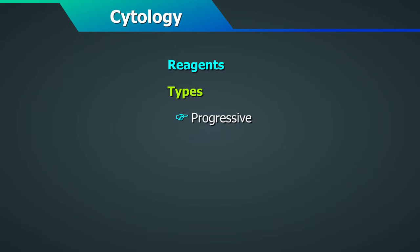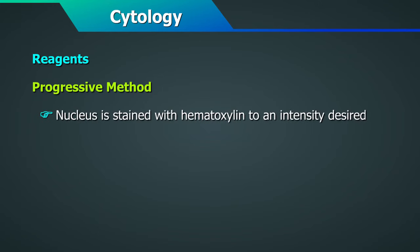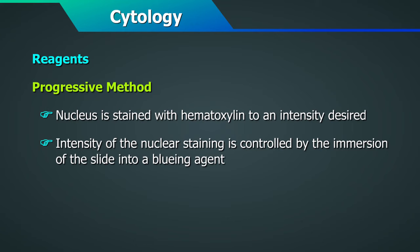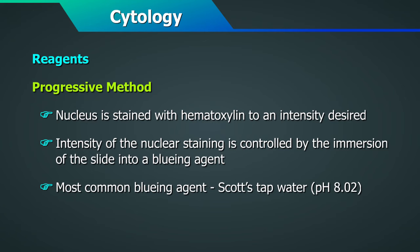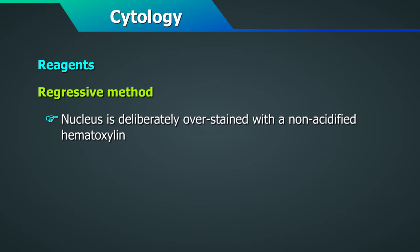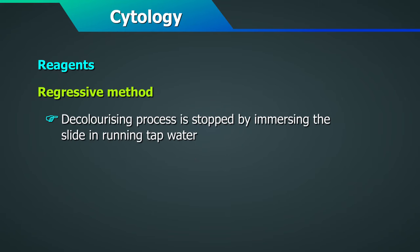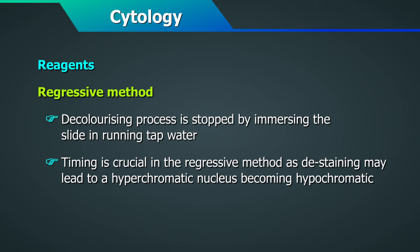There are three types of PAP stain: progressive, regressive, and rapid. In the progressive method, the nucleus is stained with hematoxylin to the desired intensity, controlled by immersion of the slide into a bluing agent — the most commonly used being Scott's tap water with a pH of 8.02. In the regressive staining method, the nucleus is deliberately overstained with a non-acidified hematoxylin, and the excess stain is removed with dilute hydrochloric acid solution or acid water. The decolorizing process is then stopped by immersing the slide in running tap water. Timing is crucial in the regressive method, as de-staining may lead to a hypochromatic nucleus.